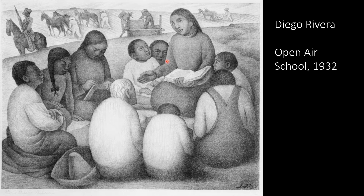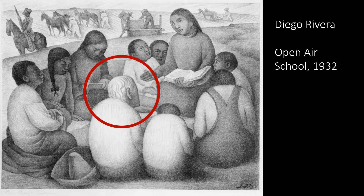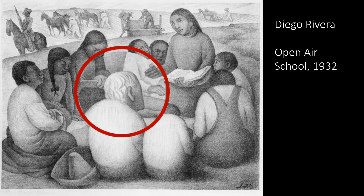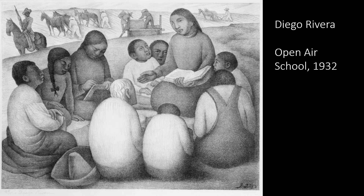Can you find a hidden message? Here's one: notice the teacher's arm points to this elderly gentleman. He may be a symbol for the inequities and illiteracy in Mexico. Can you find another one? Here's another: there's a guard with a rifle between the farmers and the school.